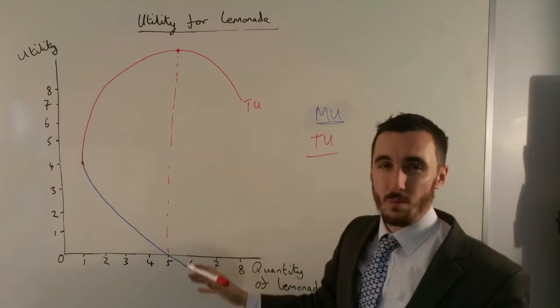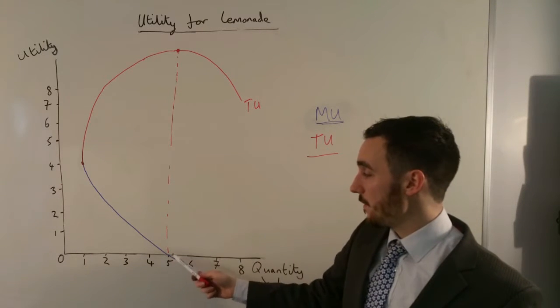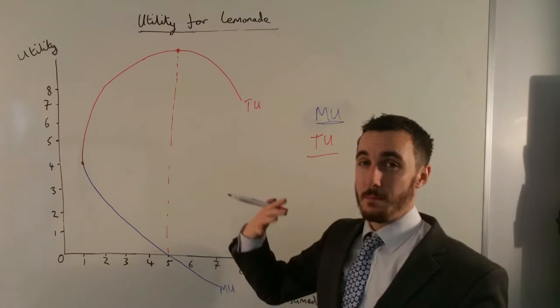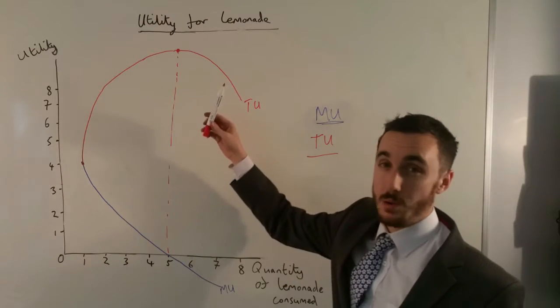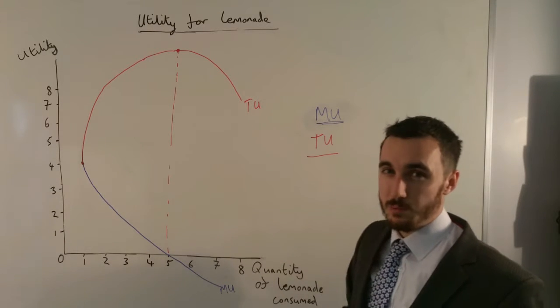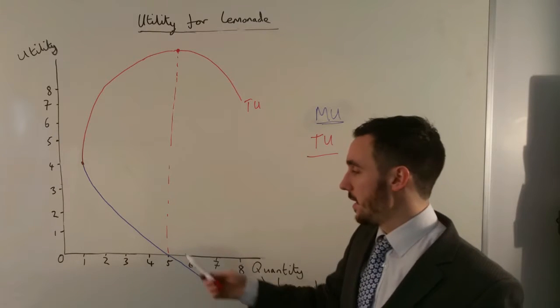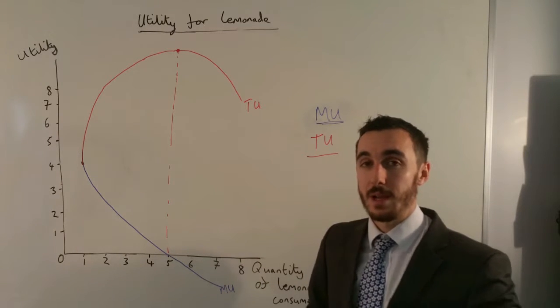So what does that mean then? Well, it means that I can say that after my fifth glass I'm getting minus utility, so my total happiness, my total utility is going to be falling. So I would probably stop consuming. Well, I would stop consuming if I was a rational consumer at five glasses of lemonade.